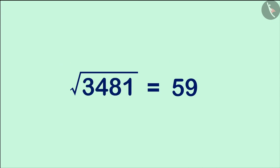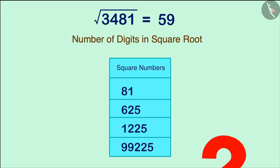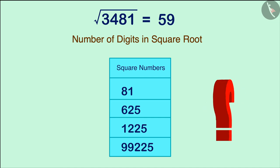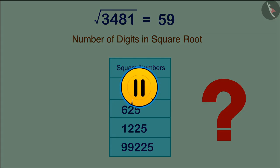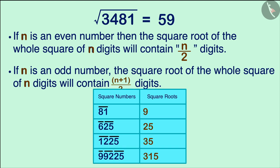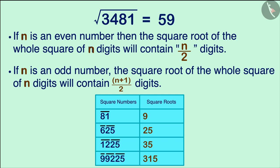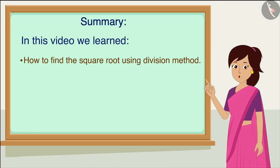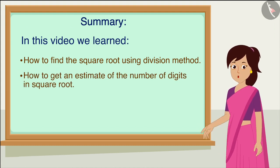We have seen that the given perfect square has 4 digits and its square root has 2 digits. Can you guess how many digits will be there in the square root of these perfect square numbers? If we have a perfect square of n digits and n is an even number, then its square root will have n by 2 digits. If n is an odd number, then its square root will have n plus 1 by 2 digits. If you look carefully, you will find that the number of digits in the square root of a perfect square is equal to the total number of bars placed over its digits. In this video, we learned how to find the square root using the division method and how to estimate the number of digits in the square root of a perfect square number.